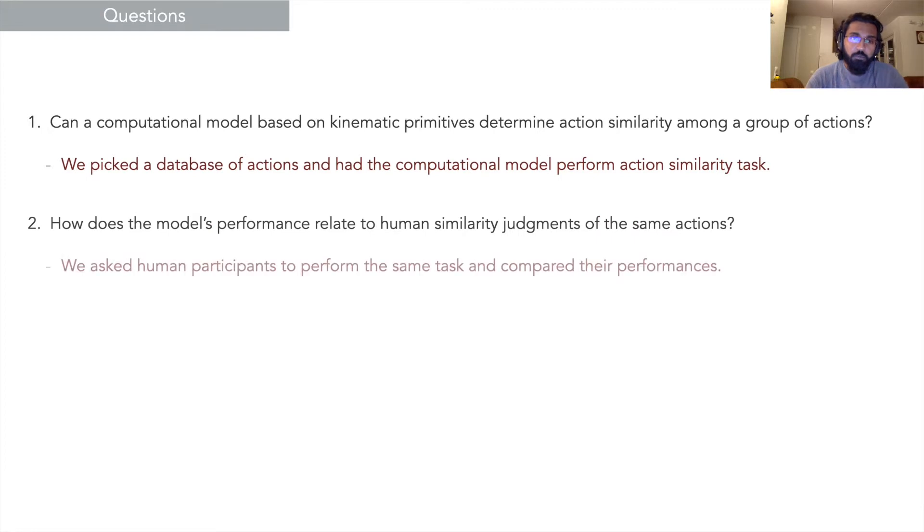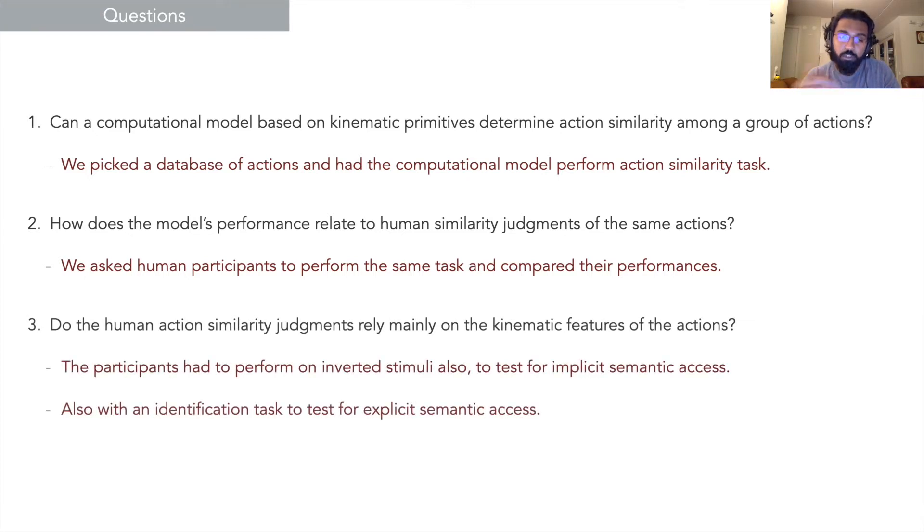Does the model's performance relate to human similarity adjustments of the same? We had human participants perform the same task and compared performances. Do human action similarity adjustments rely mainly on kinematic features of the action? For that, we used inverted stimuli to test for inversion effect and additional tasks in which we asked them specifically to identify the actions.